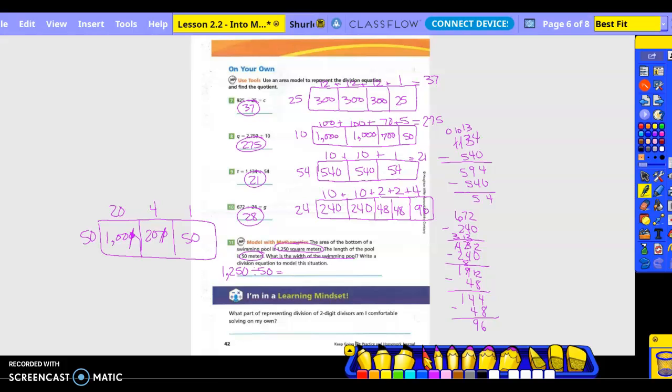Not 200, sorry guys, 25. So 20 plus 4 plus 1 is 25. They want to know the width. They don't want to know the area.